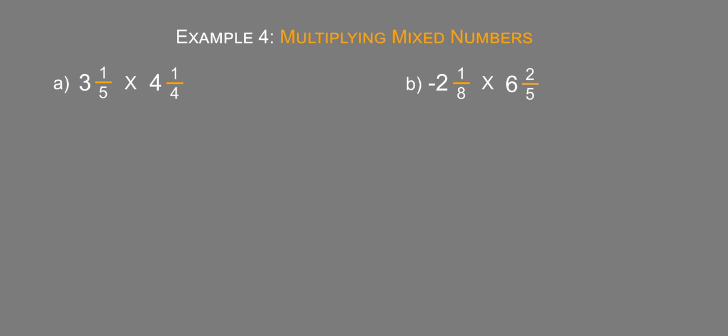With part A, we're given 3 and 1/5 times 4 and 1/4. So if we convert to improper fractions first, we have three times five is 15 plus one is 16, so this is 16/5. Then four times four is 16 plus one is 17, so that's 17/4.